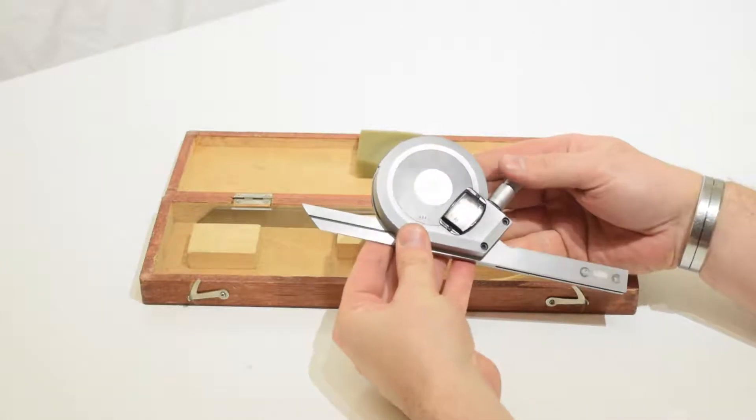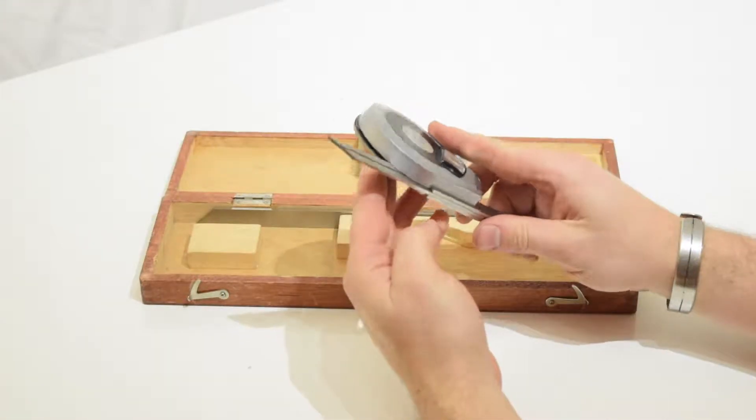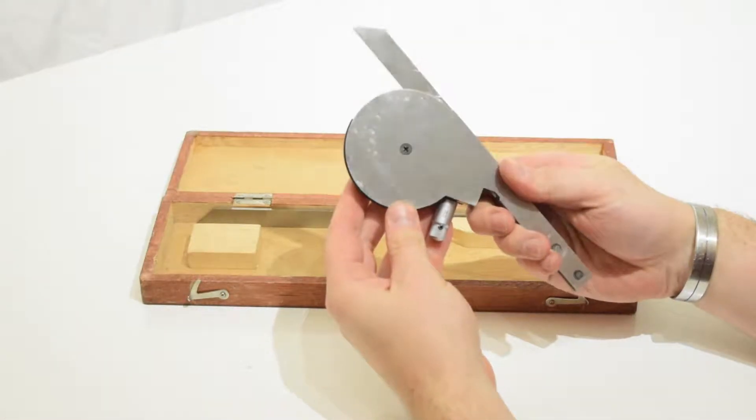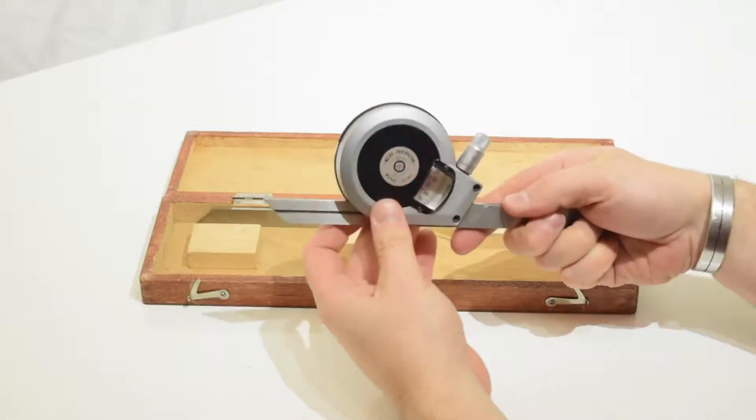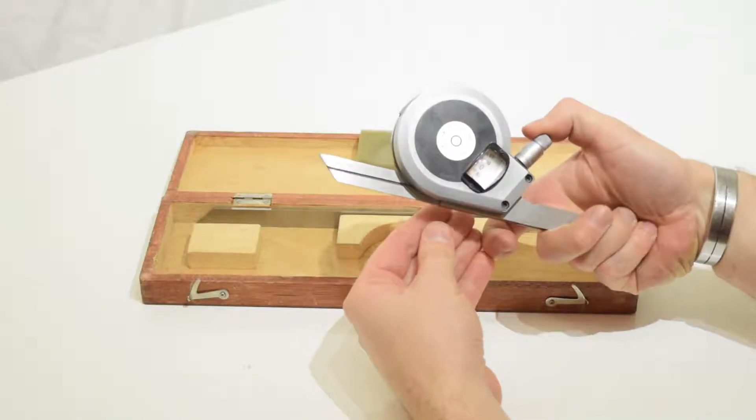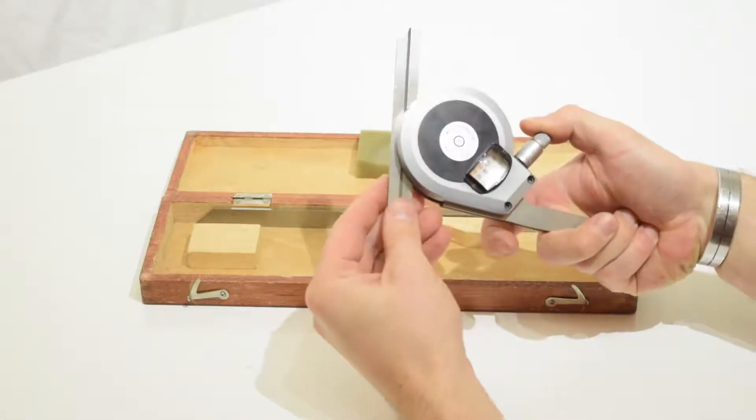It's very easy to use. You see this dial thimble on the outer edge. You can grip the protractor and slide this dial out, and that allows the rule to be rotated.